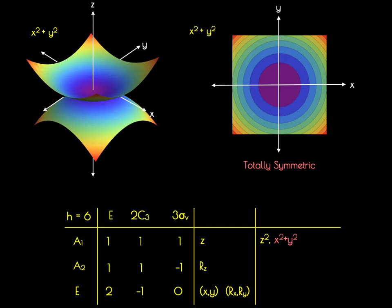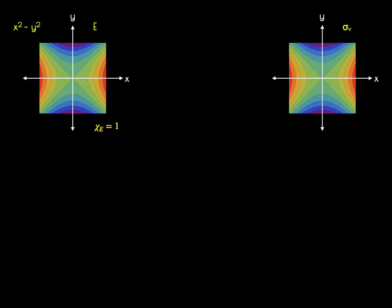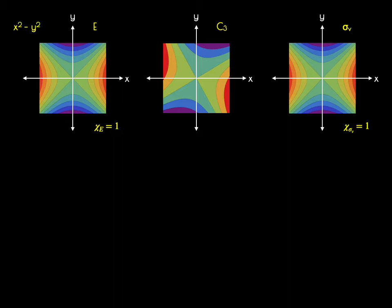For the remaining four functions, we're going to look at two-dimensional contour plots on specific planes representing the Cartesian axes. We plot the x²−y² function, which has positive values along the x-axis and negative values along the y-axis. The E character for this function is 1. Jumping ahead to the mirror plane through the xz plane, that returns the same function, so positives remain positive, negatives remain negative, and it gets a character of 1. When we do the C3 rotation, we don't get the same function or its inverse back, so the character is not equal to ±1.